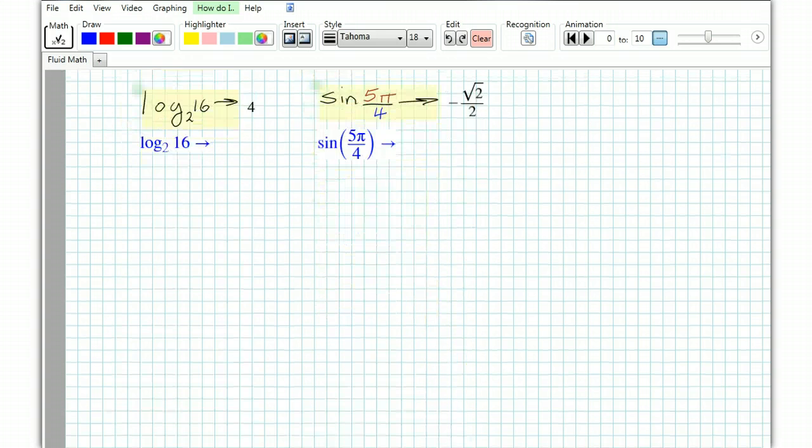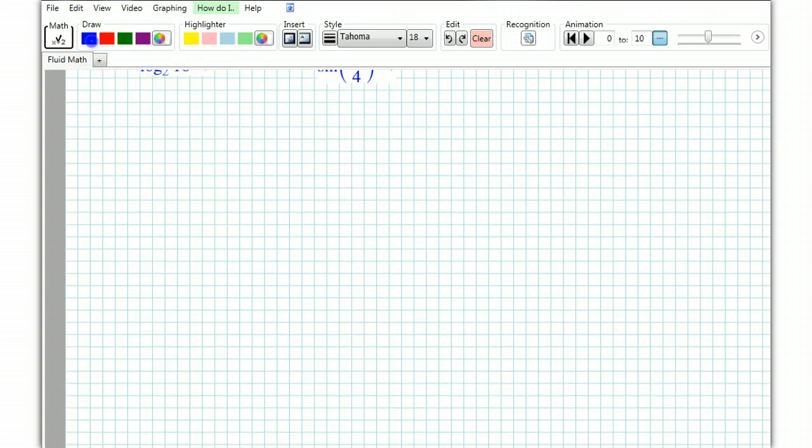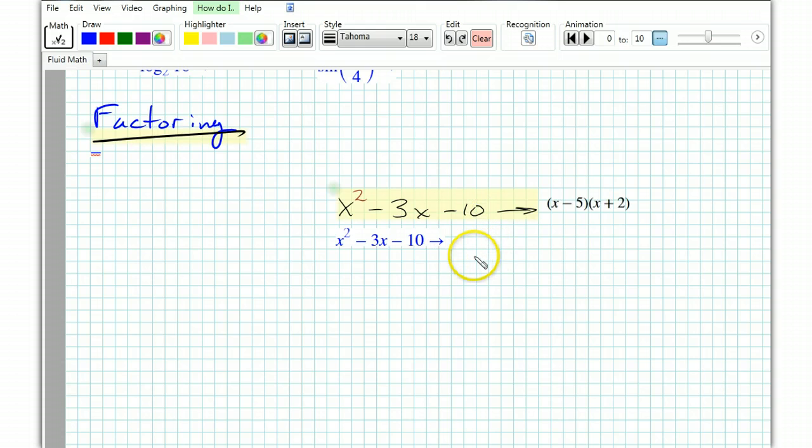It can also factor things. For example, if I'd like to factor x squared minus 3x minus 10, I just do the arrow, and there it is, factored, x minus 5 times x plus 2.